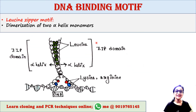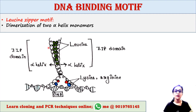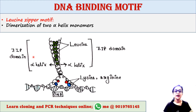Next is the leucine zipper motif. The leucine zipper motif is created by the dimerization of two alpha helix monomers — this is one alpha helix monomer and this is another. The leucine zipper is formed by the interaction between two zip domains.